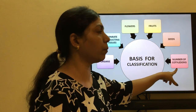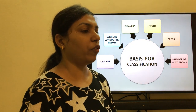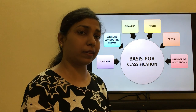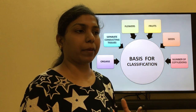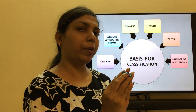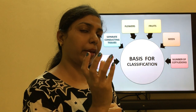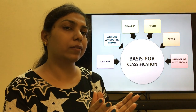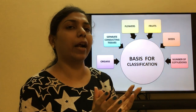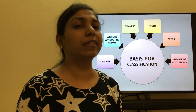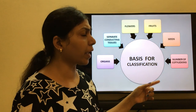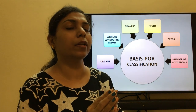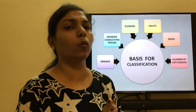So when it comes to seeds, whether they are inside or outside the fruit becomes a category for classification. The last property is the number of cotyledons. When you plant a seed into the soil and it begins to germinate and grow, the seed will either break open into one single part or into two parts. If it breaks open into two parts, those plants are called dicotyledonous — meaning it has two cotyledons. If the seed remains as one single part, it is called monocotyledon — meaning it has only one cotyledon.